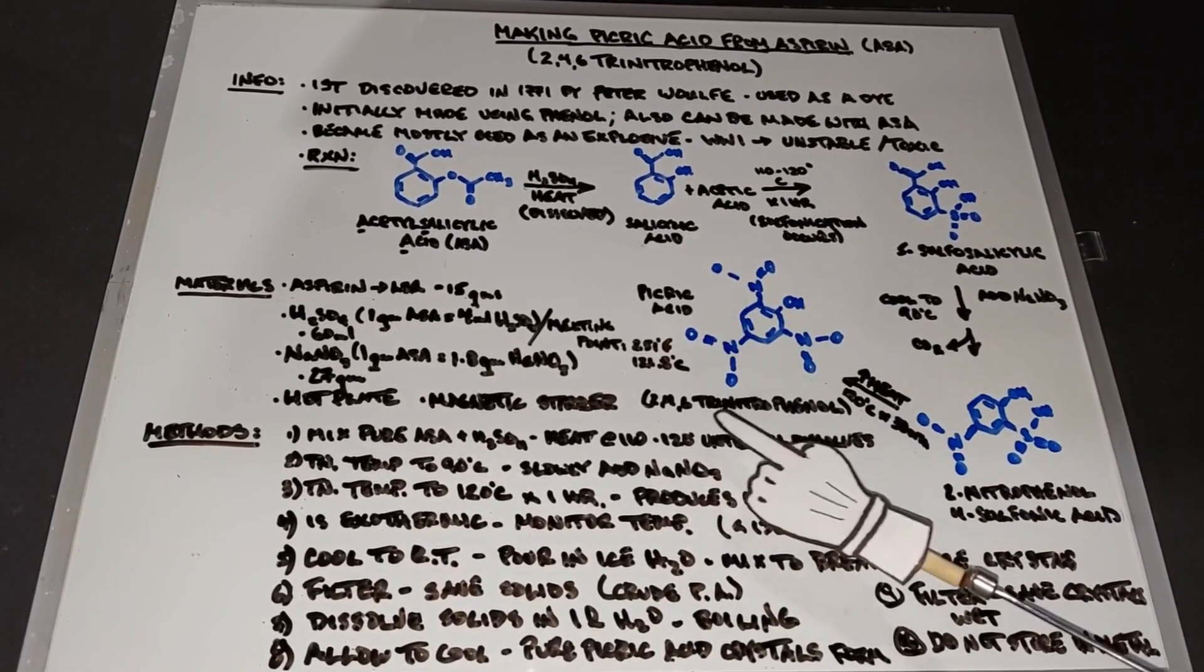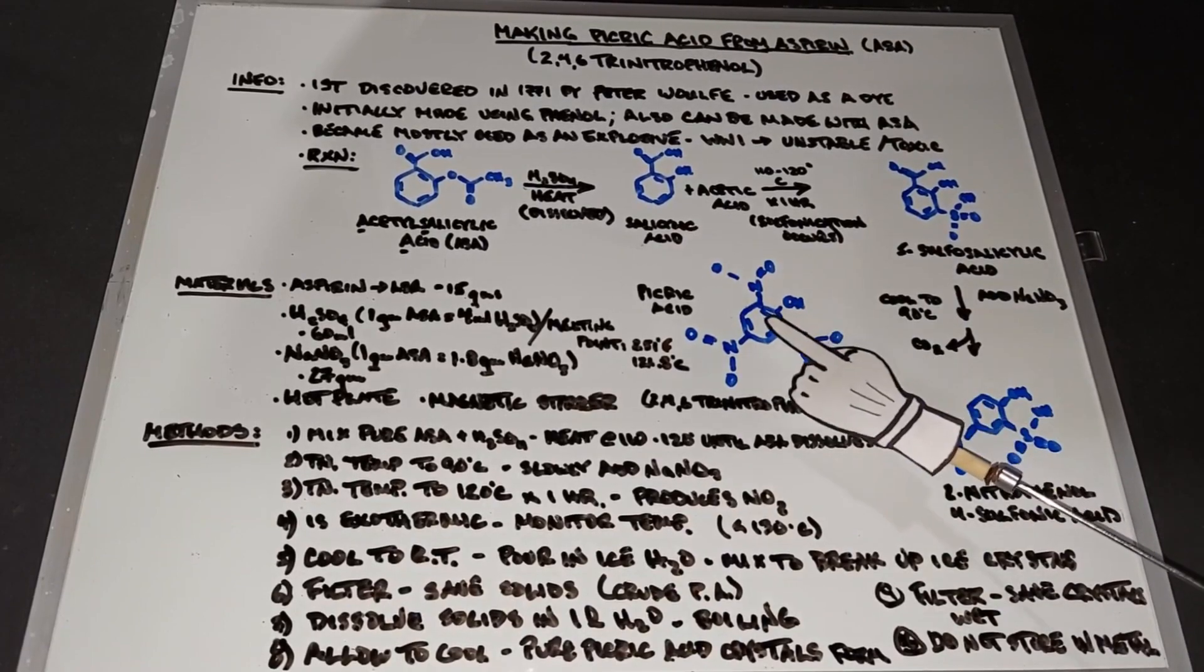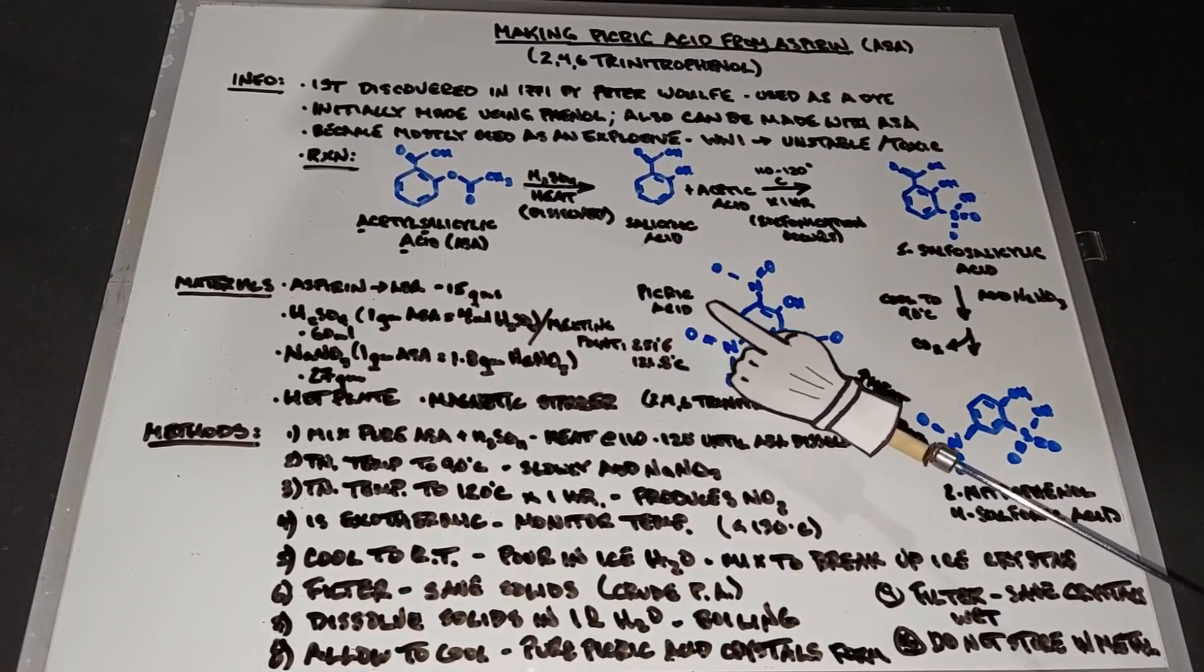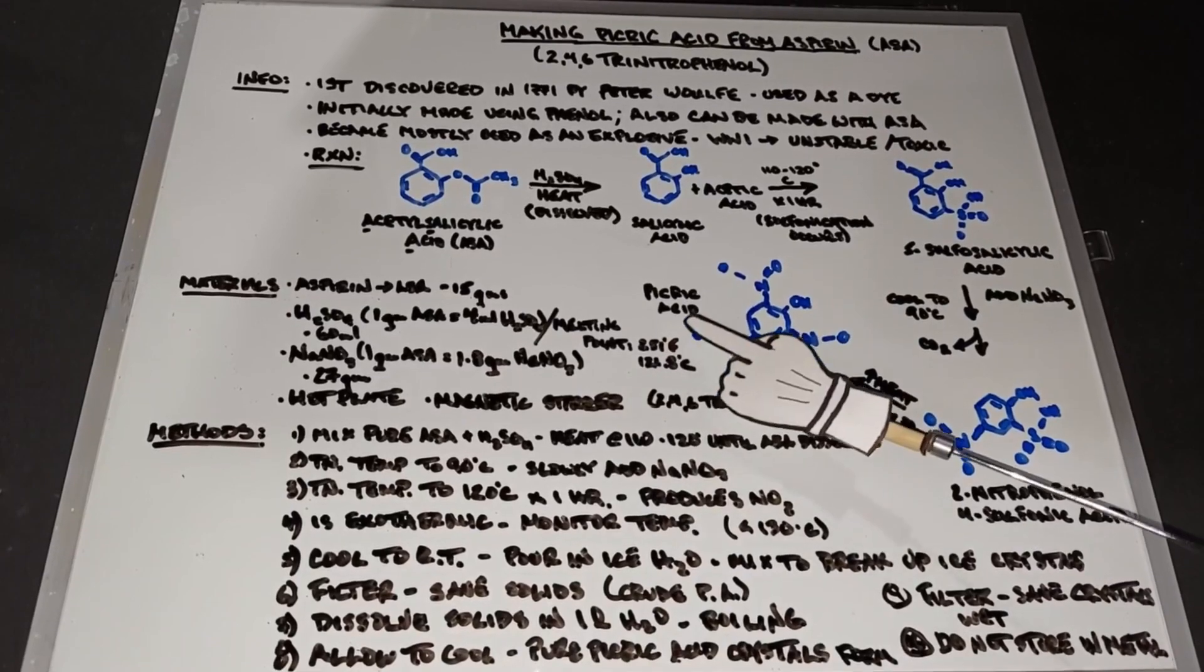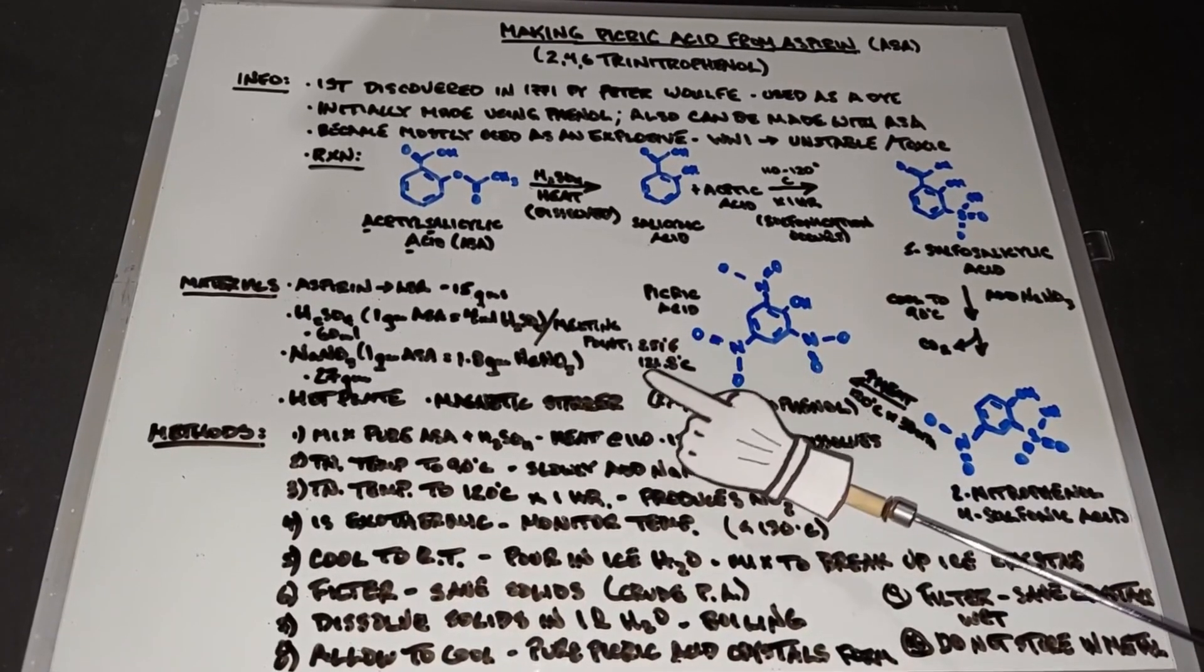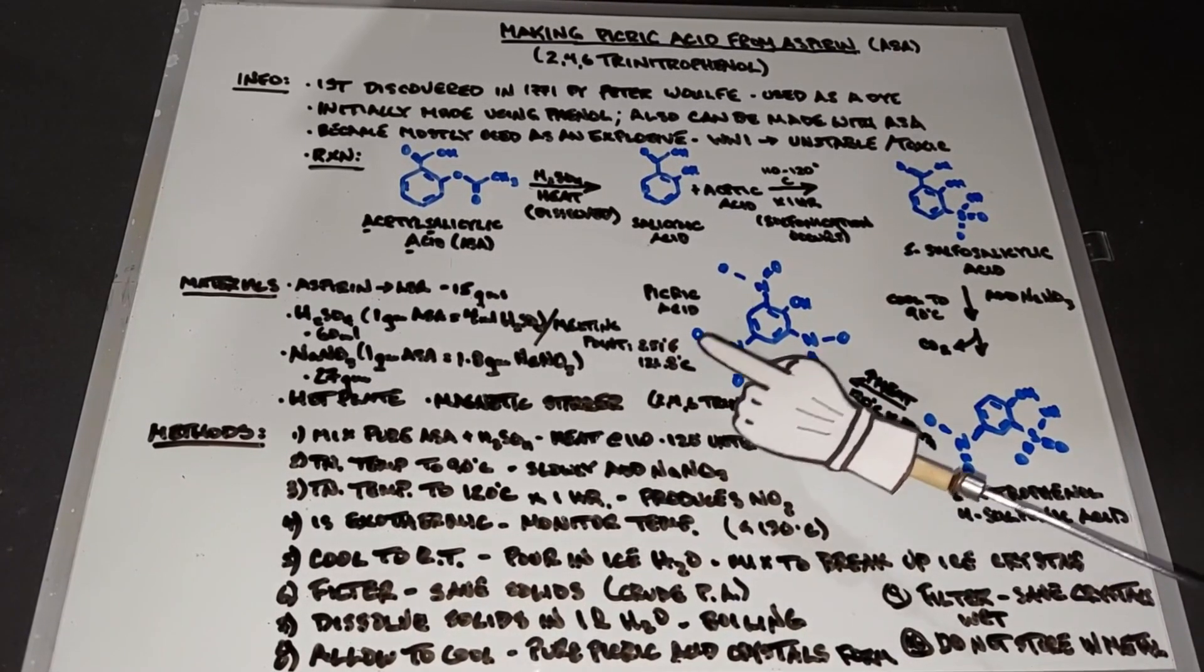This final diagram here with the three nitrated groups on the benzene ring is, in fact, picric acid. Picric acid has a melting point of approximately 251 degrees Fahrenheit, or 121.8 degrees Celsius.